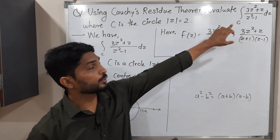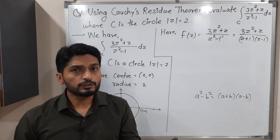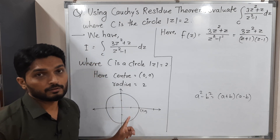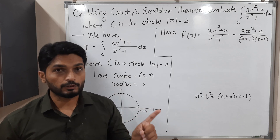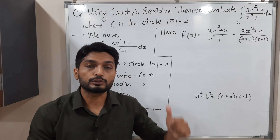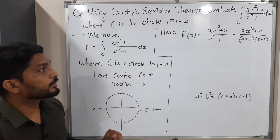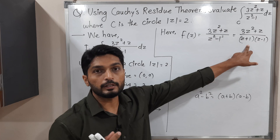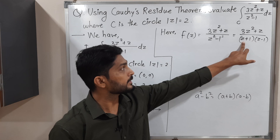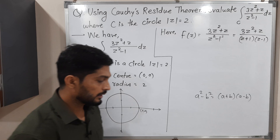We have to solve this integration with the help of Cauchy's residue theorem. That theorem says first we have to find the singular points of the given function which lie inside this circle. After that we have to find the residue at those points, and by adding them and applying Cauchy's residue theorem we get the final answer. So the singular points are where the denominator is 0: z = -1 and z = 1.